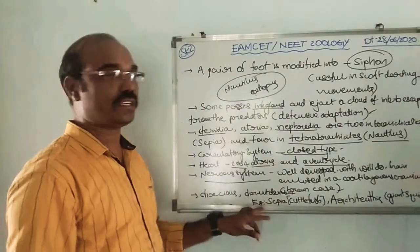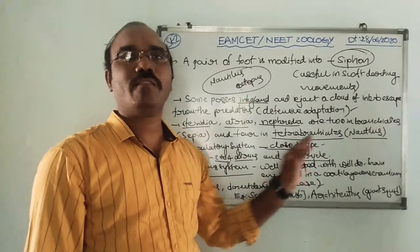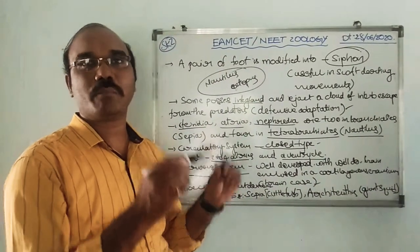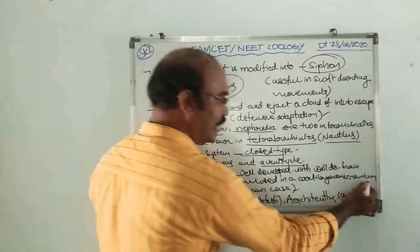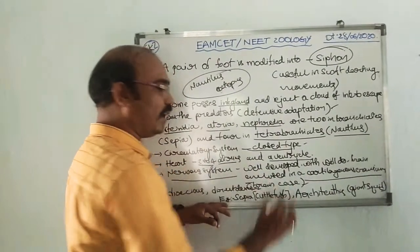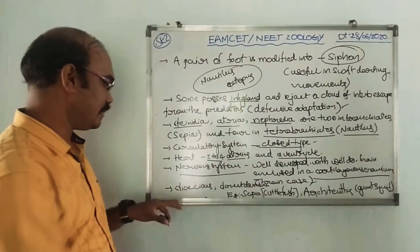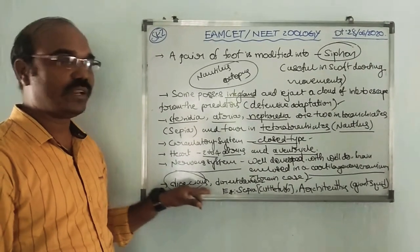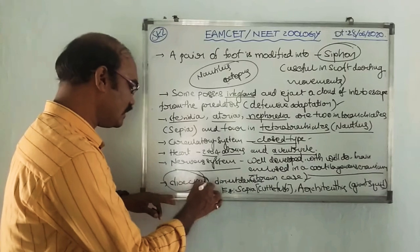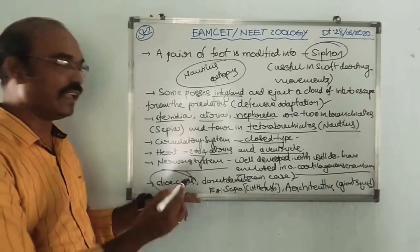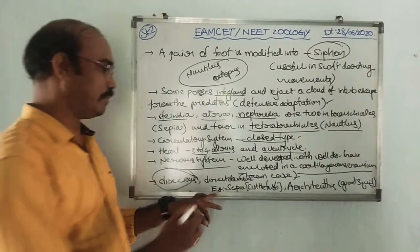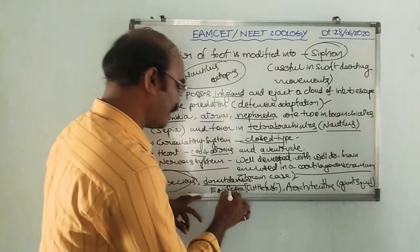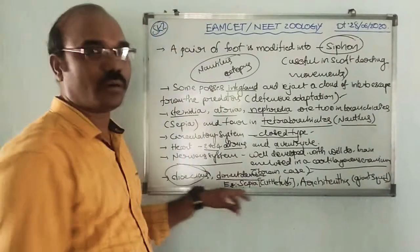The nervous system is very well developed with a well-developed brain, protected by a cartilaginous cranium called the brain case. These organisms are dioecious — unisexual — meaning male and female are separate. Direct development is seen in the Cephalopoda.